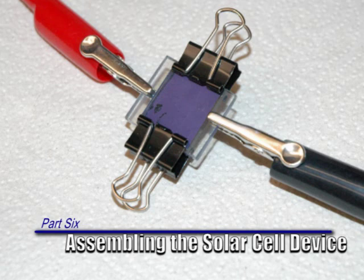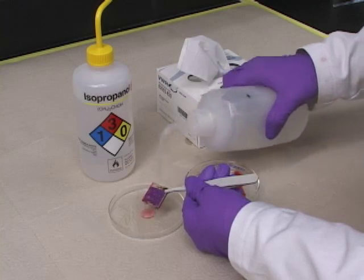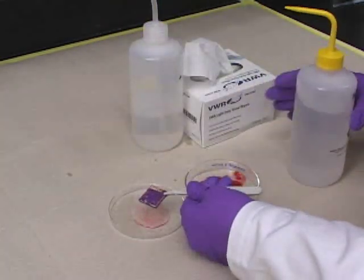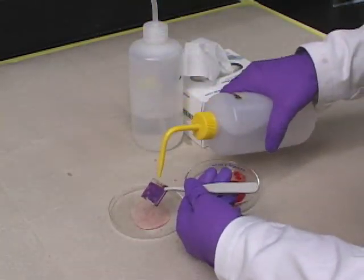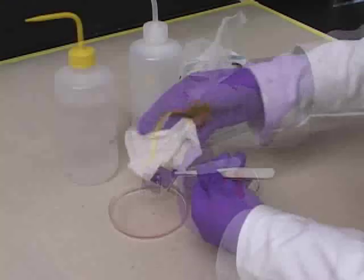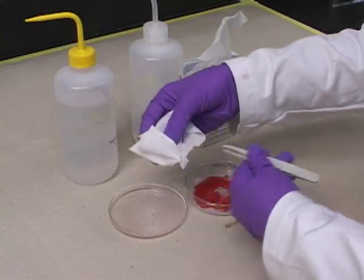Part 6. Assembling the Solar Cell Device. Step 1. If the stained titanium dioxide glass slide has been stored in vinegar, carefully remove it. Rinse the slide with water and then with ethanol. Then gently blot it with a tissue.